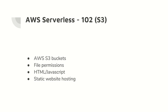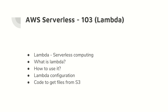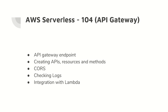In the next video we'll cover AWS serverless with S3 — S3 buckets, file permissions, the HTML/JavaScript code required to host our website, and how static website hosting works. In video 103 we'll cover AWS Lambda — how it works, its configurations, and the actual code to get files from S3. In video 104, on API Gateway, we'll see how to create endpoints, APIs, resources, methods, how CORS works, how to check logs using CloudWatch, and how to integrate API Gateway with Lambda.